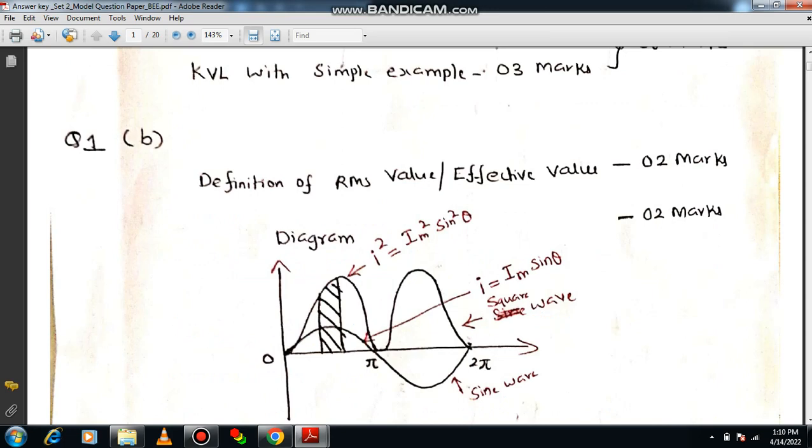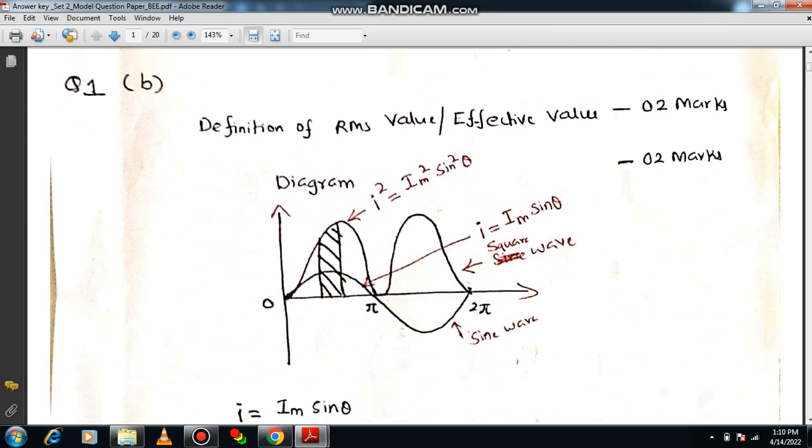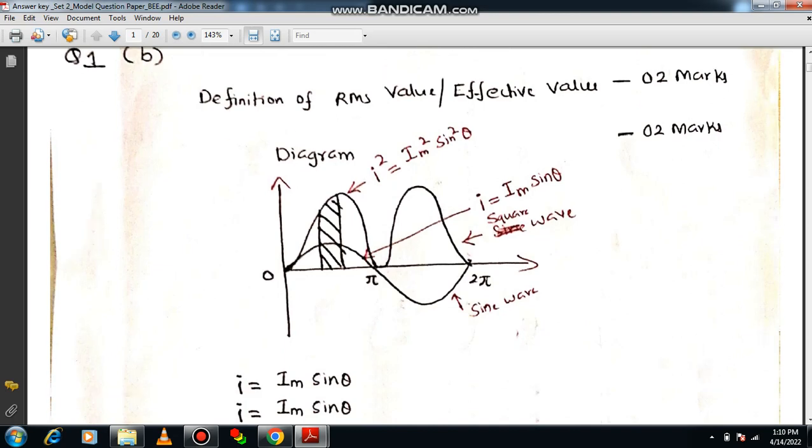If you can write the definition, that is well and good, you will be getting 2 marks. Then a relevant diagram can be drawn. You have to mark the effective value of DC and AC. Also mention the square wave. You can very clearly observe.